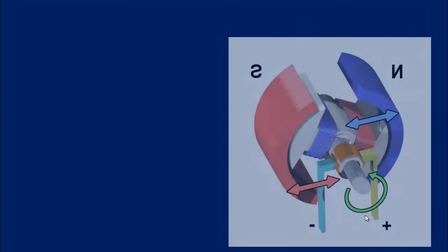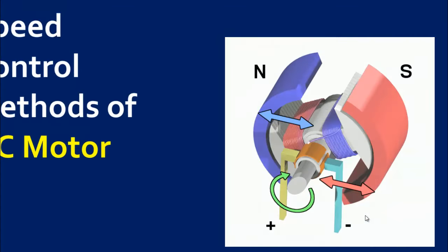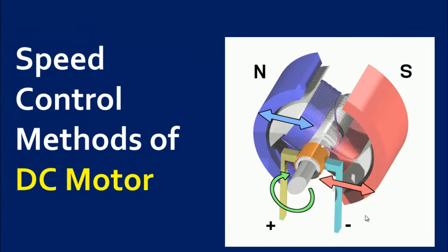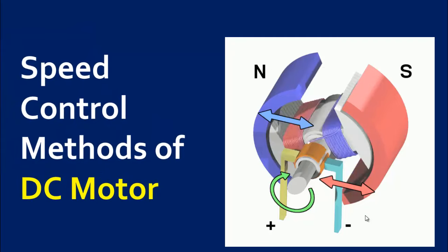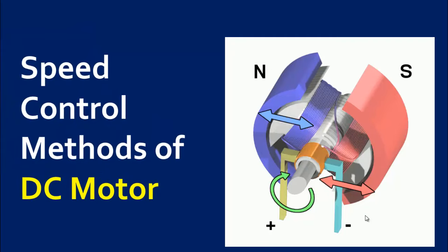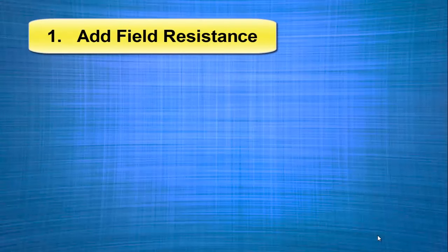Welcome back to Electrical Lectures channel. In today's video, we're going to discuss different methods to control the speed of a DC motor. One of the most important features of the DC motor is that their speed can easily be controlled. There are three general methods of speed control of a DC motor.